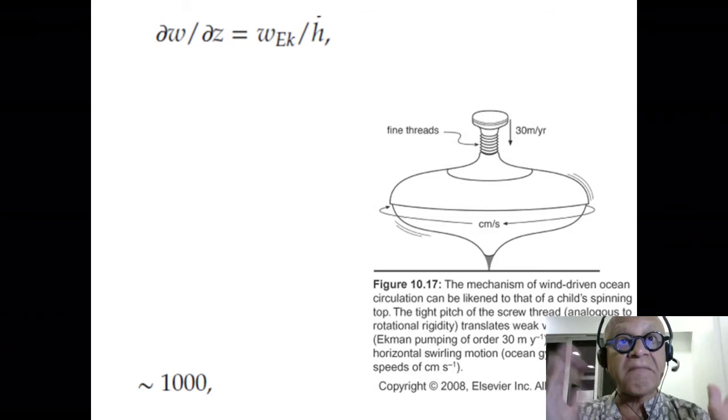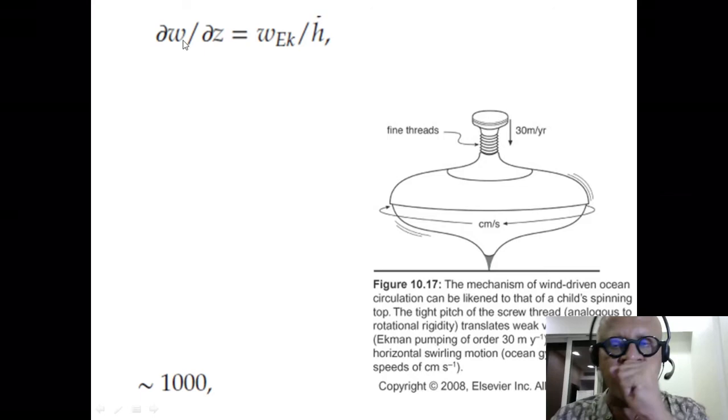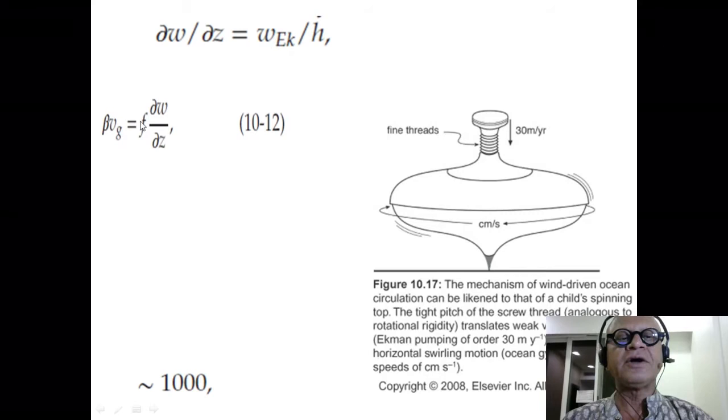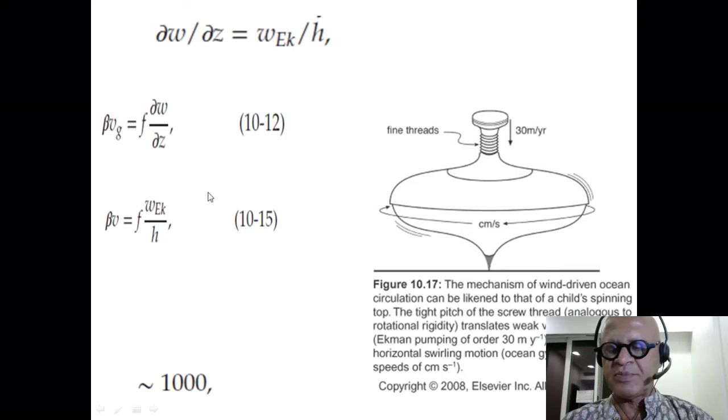So let's write the vertical gradient of w, dw/dz, as w_Ekman over h, where h is the height of the water column we are looking at. w_Ekman is pumping in and beta v_g for the interior flow was then f dw/dz, which you can write as f w_Ekman over h because of this approximation here.